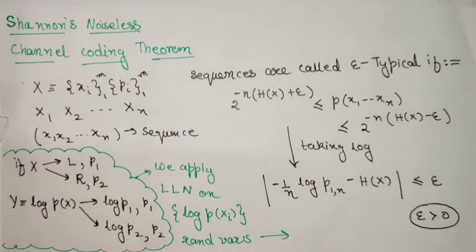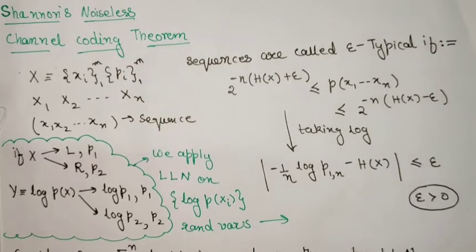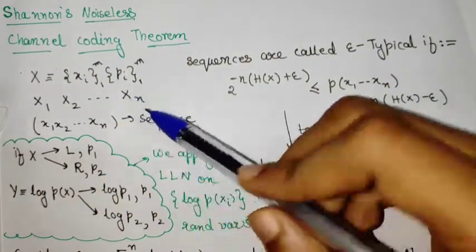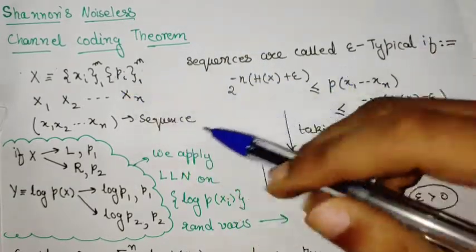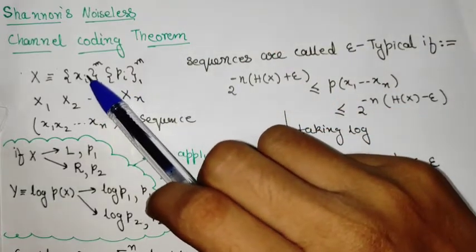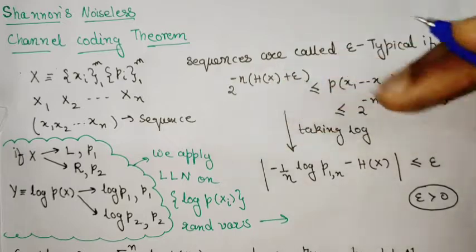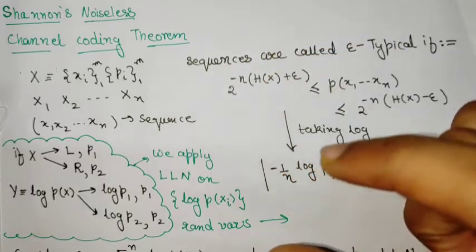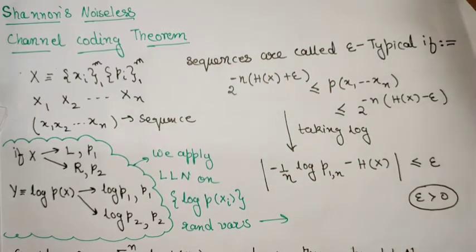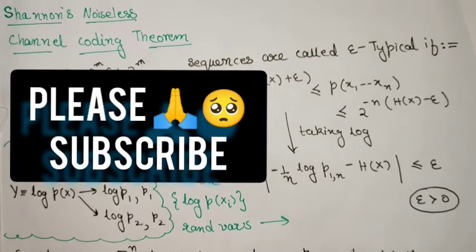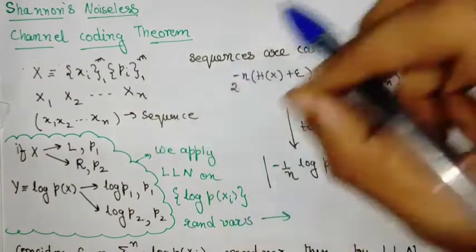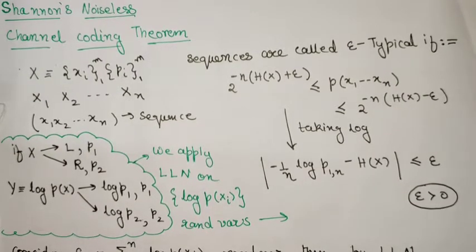Welcome to this video where I will be discussing Shannon's noiseless channel coding theorem. This is a continuation of the previous video where we discussed the overview. The essential idea is that given a random variable with a non-uniform probability distribution, we have an intuition about which variable is more probable, and using this underlying probability we can code or store our sequence in a much more compressed version rather than using brute force coding.